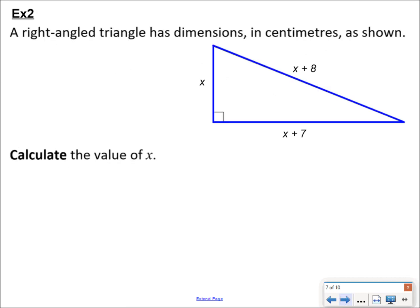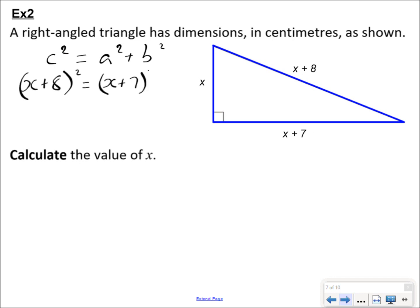Here's another example. This time there's no 'show that' — the question isn't broken down into two parts. It just gives you three dimensions for a right-angle triangle and asks you to find the value of x. Because it's a right-angle triangle, you should immediately think Pythagoras: the hypotenuse squared equals the sum of the squares of the other two sides. So we write (x + 8)² = (x + 7)² + x², which gives x² + 16x + 64 = x² + 14x + 49 + x².